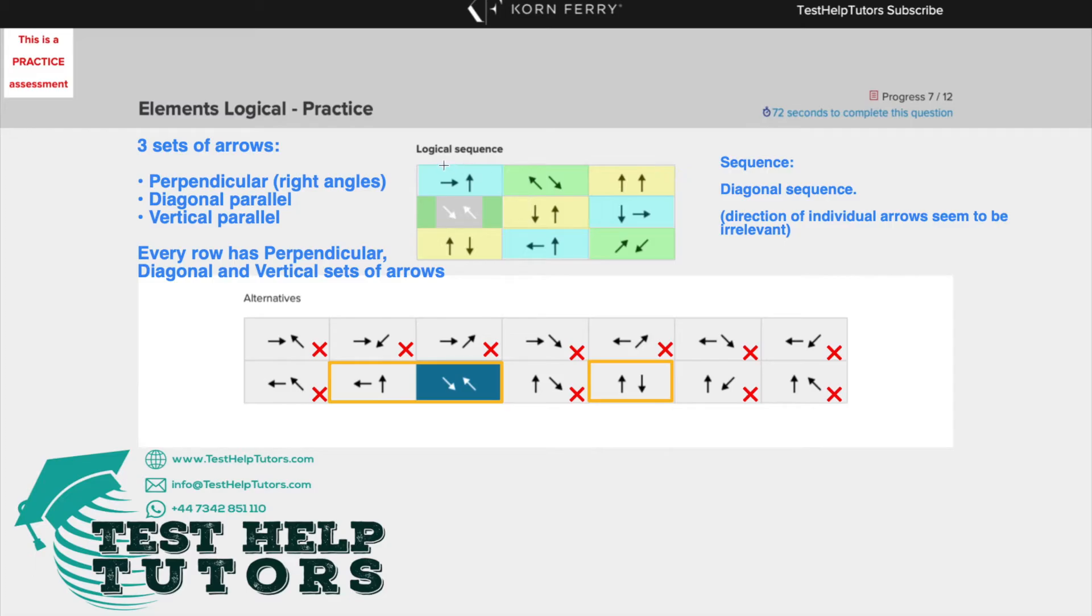The first thing we should notice is that we've only got three different types of sets of arrows. Type one would be the perpendicular arrow set here, meaning they're pointing at 90 degrees to one another. One arrow is pointing towards the horizontal and otherwise vertical, meaning they're at right angles or perpendicular to one another. So we've got a perpendicular set here, a diagonal parallel set here, and a vertical parallel set here.